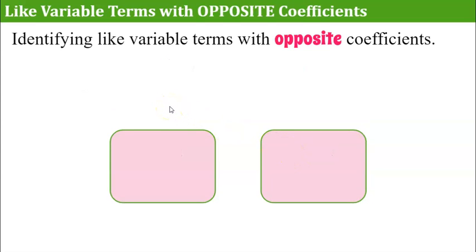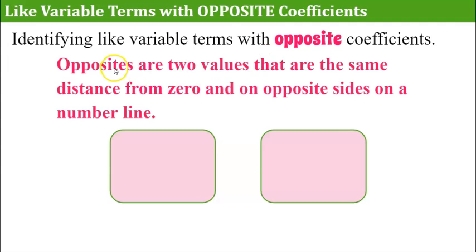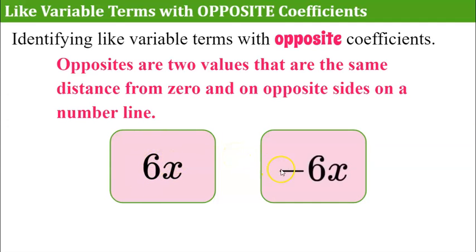Now write down two like variable terms that have opposite coefficients. Pause the video and come back when you're ready. Welcome back! Opposites are two values that are the same distance from 0 and on opposite sides of the number line. So 6x is a variable term with coefficient 6, and negative 6x is the opposite like variable term with coefficient negative 6. So 6 and negative 6 are opposites — both 6 units away from 0, one to the right and one to the left.